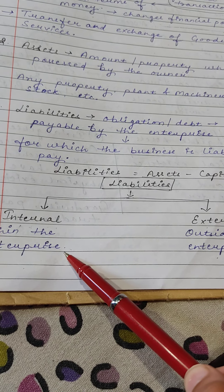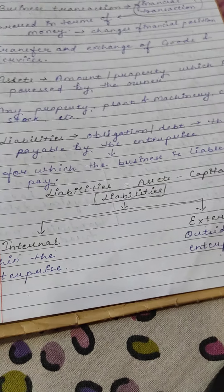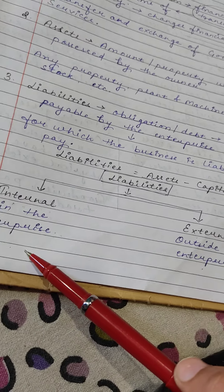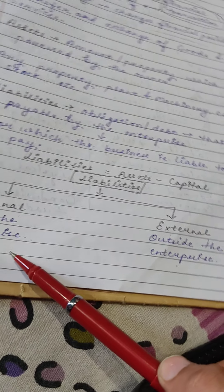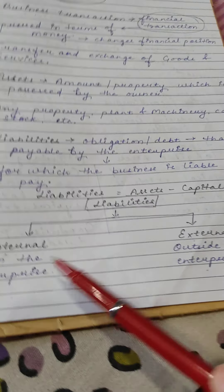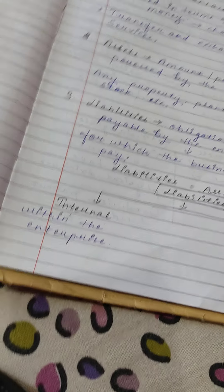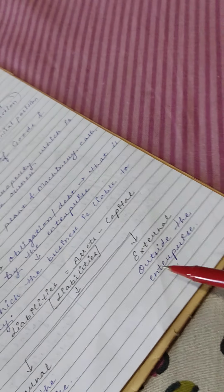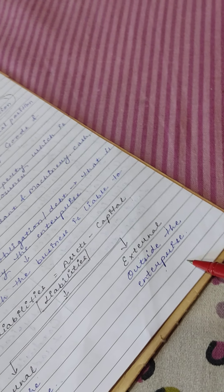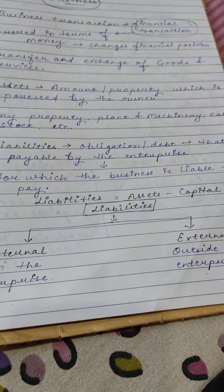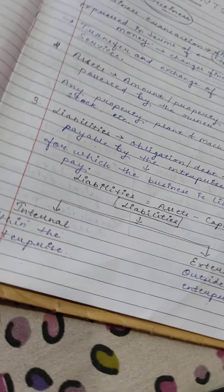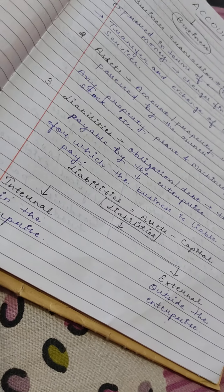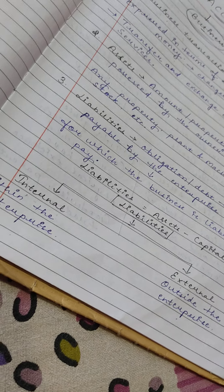Liabilities are divided into two parts: internal and external. Internal liabilities are those which we have to pay within the enterprise. External liabilities are those which we have to pay outside the enterprise — amounts payable to outsiders are external, and amounts payable within the organization are internal liabilities.